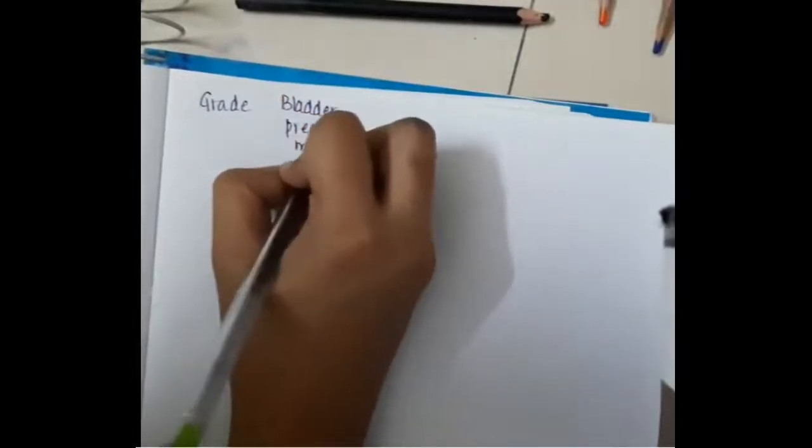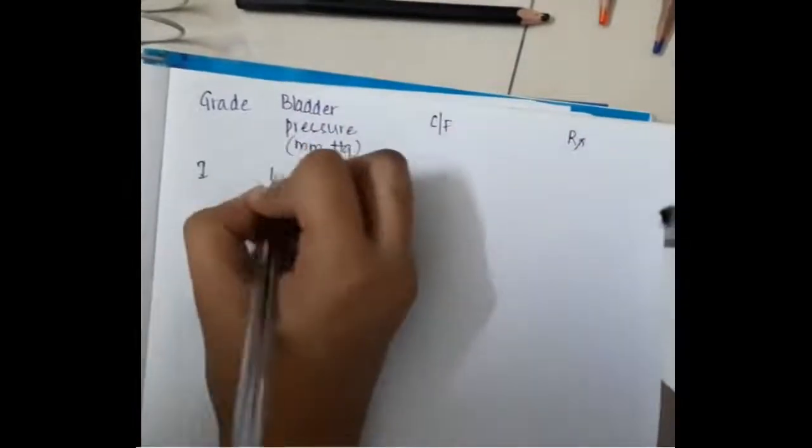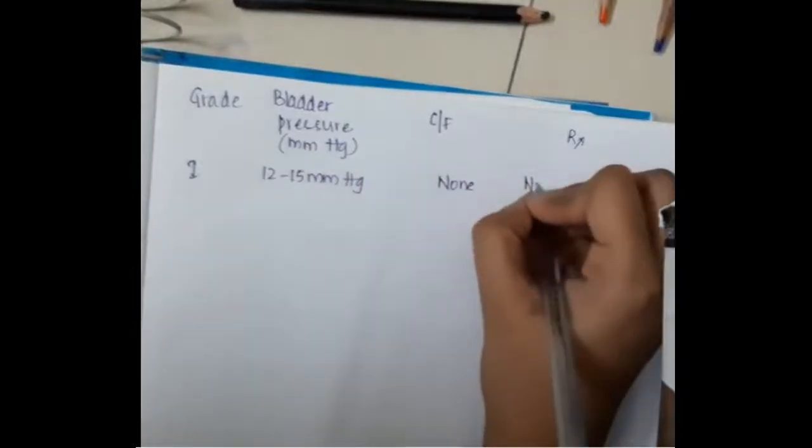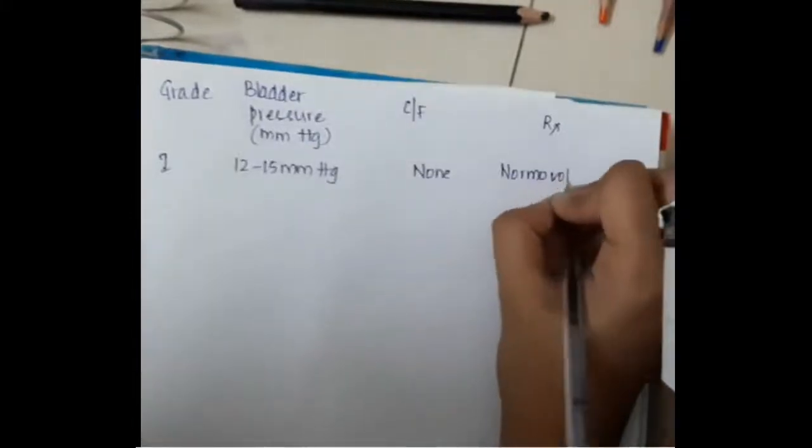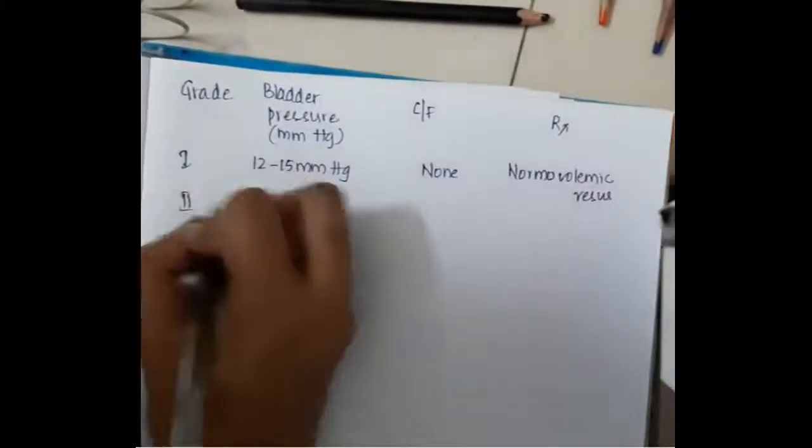We have 4 grades of intra-abdominal pressure based on bladder pressure. Grade 1, if the bladder pressure is between 12 to 15 millimeters of mercury, then that is grade 1 and there will be no clinical features. We have to give normovolemic resuscitation.